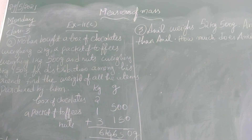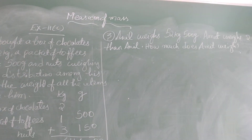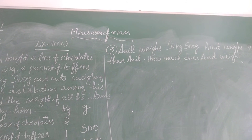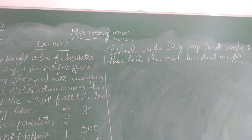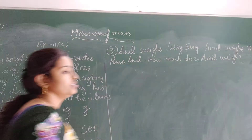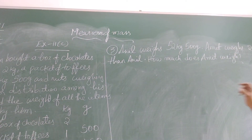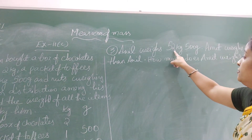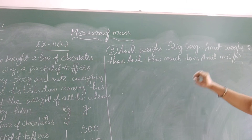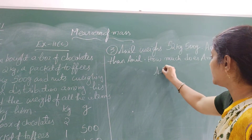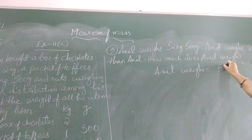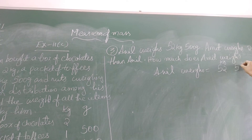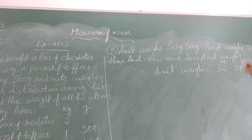Now look at the next question. Anil weighs 52 kg 500 grams. Amit weighs 2 kg 375 grams more than Amin. So we are finding about the weight. Anil weighs 52 kg 500 grams.